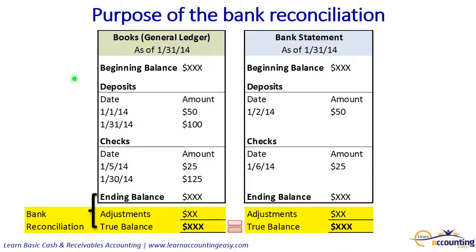These diagrams are going to help us understand what the bank reconciliation is doing. We can start from either the books, also known as the general ledger, or from the bank statement, and make certain adjustments to arrive at that true cash balance. Starting with the books, think of it like a bank statement with a beginning cash balance, deposits increasing the balance, checks decreasing the balance, and then an ending balance before the bank reconciliation has been performed.